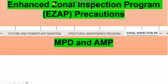Also there is the Enhanced Zonal Inspection Program — this is a new one. In the MPD or Maintenance Program you will see this page in Excel format. You will see system and powerplant maintenance tasks, structural maintenance program, and zonal inspection. The zonal inspection tasks begin with Chapter 05, so the tasks here in Chapter 5 are in the MPD and maintenance program.